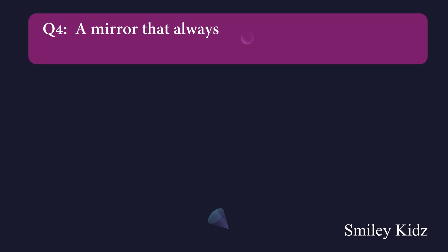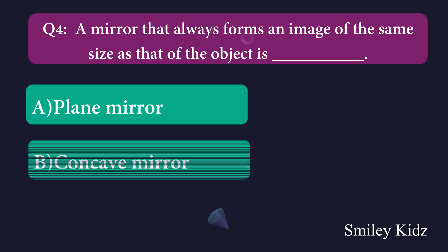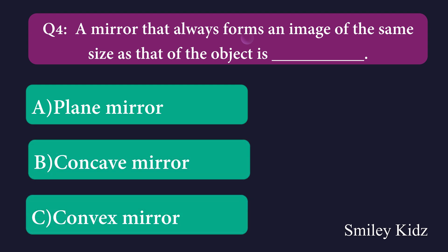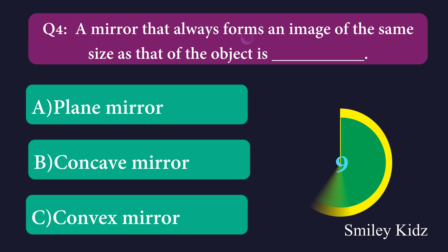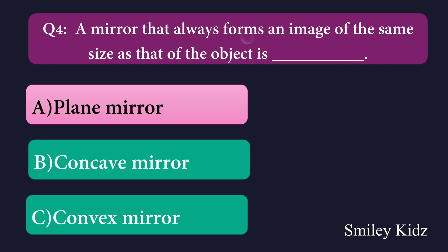Question number four: A mirror that always forms an image of the same size as that of the object is dash. Option A: plane mirror, Option B: concave mirror, Option C: convex mirror. The right answer is plane mirror. A mirror that always forms an image of the same size as that of the object is plane mirror.